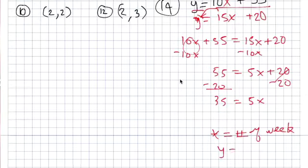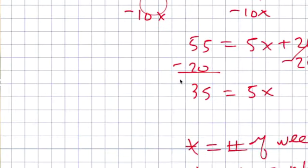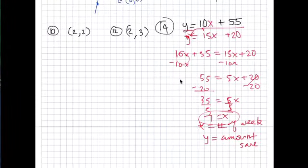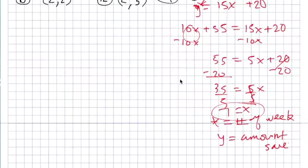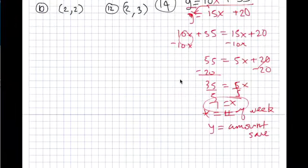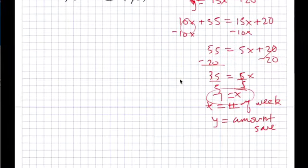X is the number of weeks. Y is the amount saved in dollars. Minus 10x from both sides, you get 55 equals 5x plus 20. Subtract 20 from both sides and you get 35 equals 5x. Divide by five, it takes them seven weeks for them to save the same amount of money in the bank. Seven weeks for your friend to catch up with you.